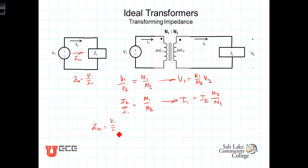well, V1 is N1 over N2 times V2 divided by I1, which is N2 over N1 times I1.